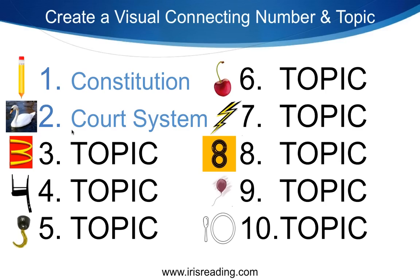You continue from there — whatever section three is gets associated with McDonald's, and section four with a chair. You can use Ronald McDonald, french fries, Big Macs — there are all sorts of visual references for number three. Notice how we always want to use exaggeration, because that will help us remember things very easily.